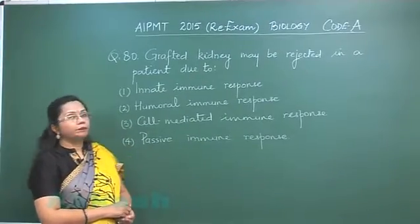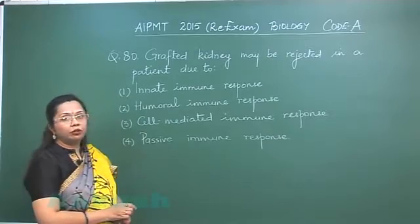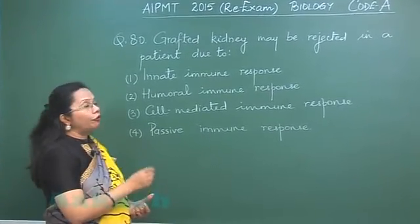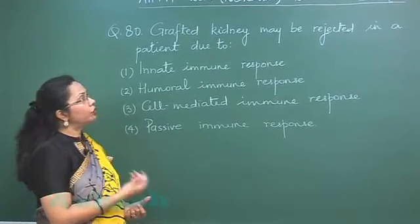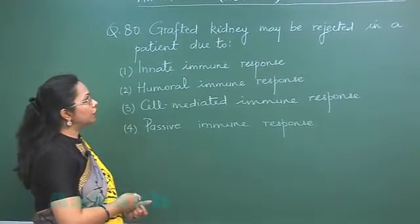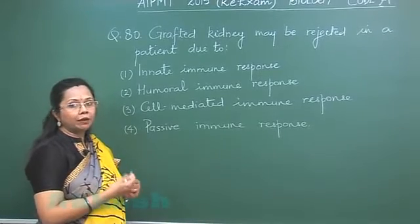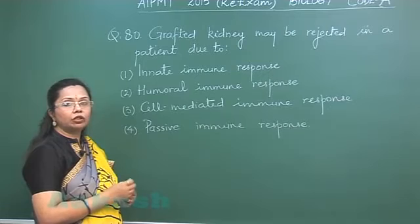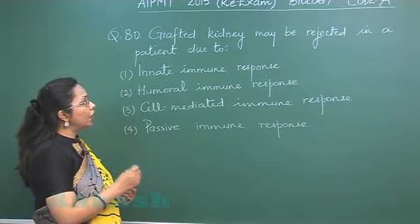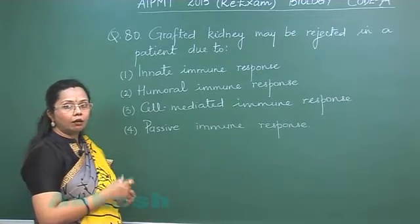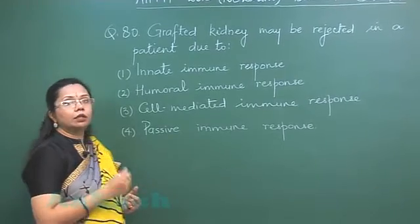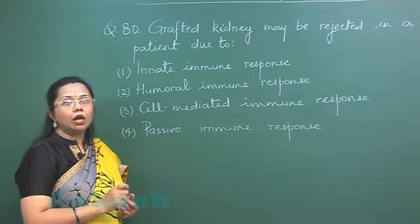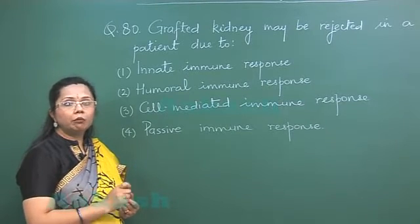In this question, a grafted kidney may be rejected in a patient. For any tissue that is transplanted, tissue typing is done in which the MHC proteins — the major histocompatibility complex — are matched. However, a complete match is possible only in identical twins; in all other cases there will be some difference.